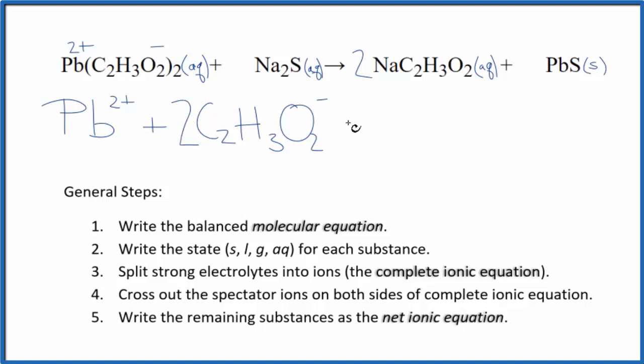And this two here means we have two of them, so we put a two in front. Then we have our sodium, group one on the periodic table, one plus, and then the sulfide ion two minus. So we have two sodium ions and then that sulfide ion. So these are the reactants in our net ionic equation.